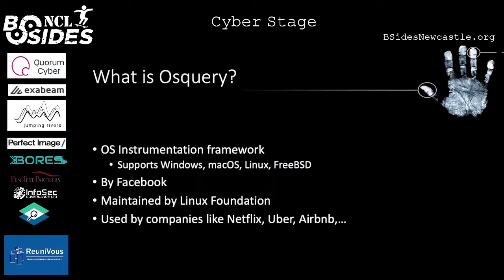What is OSQuery? OSQuery is basically an operating system instrumentation framework. It supports multiple operating systems — the more common ones being Windows, macOS, Linux, and FreeBSD — but because it's built in Go, it's quite easy to compile for less-known operating systems. Some people have even tried to compile it for Android. Originally it was built by Facebook to give them a better view of the state of their entire infrastructure, but because it was useful, the open source community led Facebook to have it managed by the Linux Foundation.